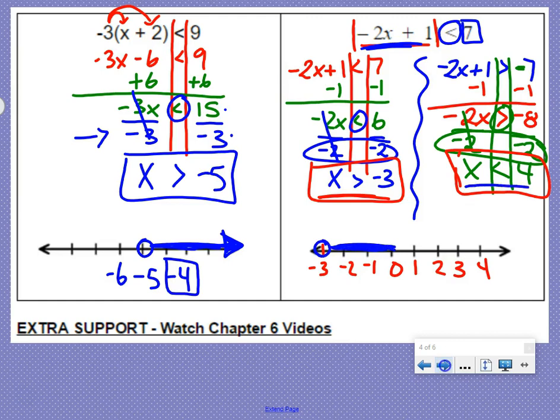And then when we do x is less than 4, we have an open circle at 4 because there's no equal to. And 3 is less than 4, so we're going to go to the left. They meet in the middle.